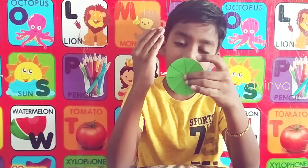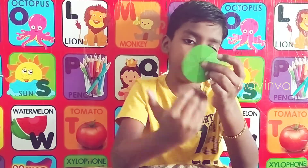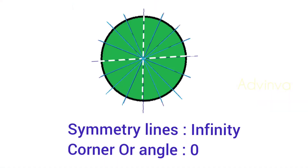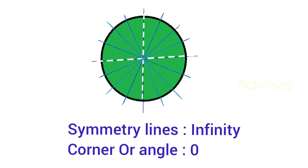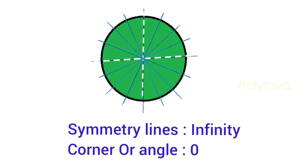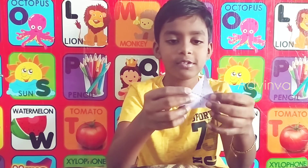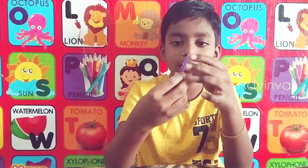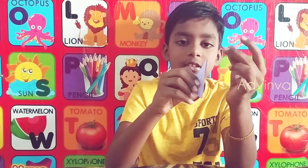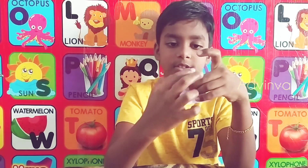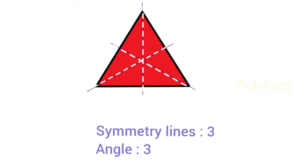Now I'm going to take a circle. How many lines of symmetry does it have? However we cut it — not just one way, but five ways, infinite ways — a circle has infinity lines of symmetry. A triangle you can cut like this and like this, so it has three symmetry lines.